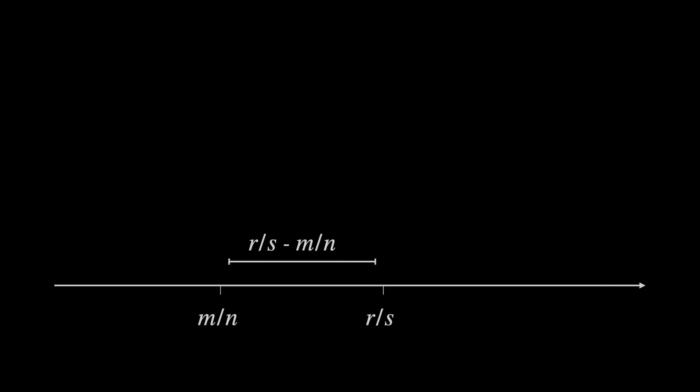Take the difference between them that's r over s minus m over n. Now we know that m over n plus this difference will give us back r over s but if we multiply it by something less than 1 first it will give us something in between.